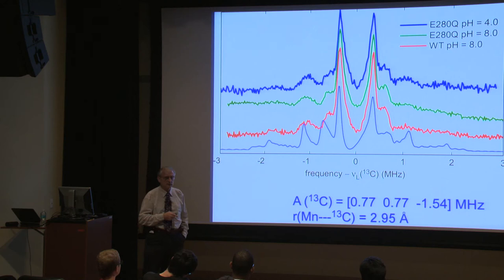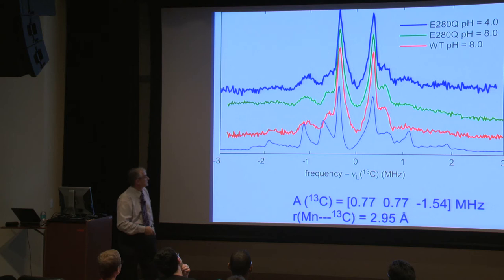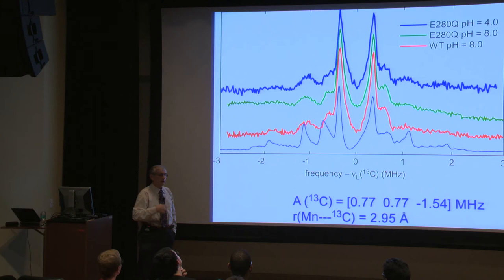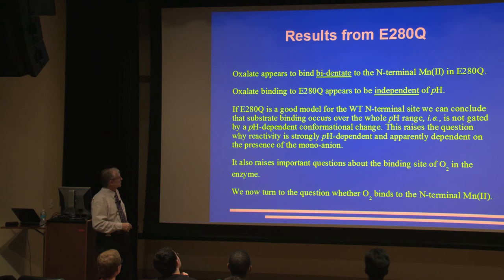Sometimes when I mix my oxalate with a wild-type enzyme, I do see some of those sharp lines popping up, and that simply tells me I'm freezing out some intermediate that shows a larger distance between my carbon-13 and my manganese. So the absence really is true. That leads me to believe I only see one distance between carbon-13 and manganese, which is proof that I have bidentate binding modes. So oxalate appears to bind bidentate to my N-terminal manganese, and it appears to be independent of pH.